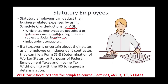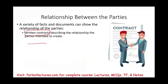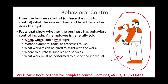If a taxpayer is uncertain about their status, they can file an SS-8 — Determination of Worker Status for Federal Employment Tax and Income Tax Withholding — and the IRS will tell you whether you should be classified as an employee or an independent contractor. Usually, though, you should know your status.